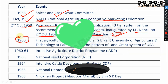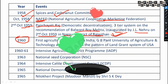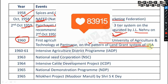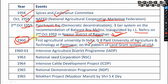In 1960, the first agricultural university in India — G.B. Pant University of Agriculture and Technology at Pantnagar — was established on the pattern of the land grant system of the USA. The Odisha University of Agriculture and Technology came in 1962.